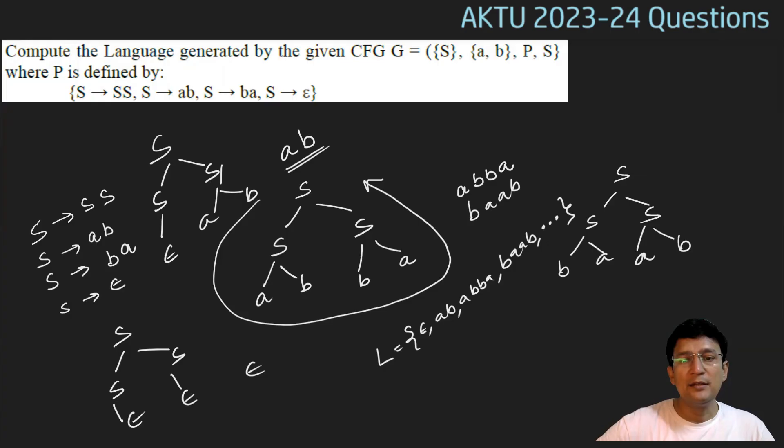The language is generating strings where the number of A is equal to number of B, but the number of A equal to number of B can be zero also. The language is generating the string where the string is the element of A, B star or A, B closure, where number of A in W is equal to number of B in W. So this is the language we get by the given grammar.